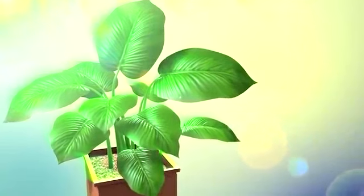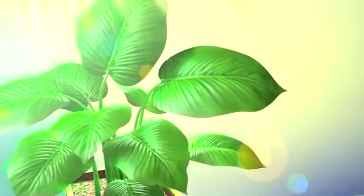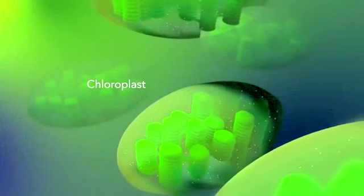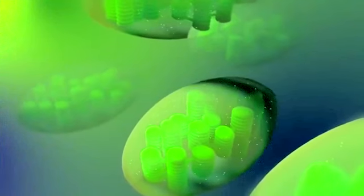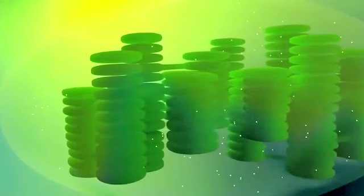Some organisms, such as plants that are photo-autotrophic, meaning they capture sunlight for energy, have cells with an organelle called chloroplast. The chloroplast is where photosynthesis happens. It's green because it has a green pigment called chlorophyll.